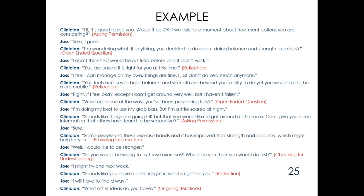The clinician says: 'You're unsure it is right for you at this time.' — this is reflection. Joe says: 'I feel I can manage on my own. Things are fine. I just don't do very much anymore.' The clinician says: 'You feel exercises to build balance and strength are beyond your ability to do, yet you would like to be more mobile.' — that's reflection again. Joe says: 'Right. If I feel okay, except I can't get around very well, but I haven't fallen.' The clinician says: 'What are some of the ways you've been preventing falls?' — that's another open-ended question.